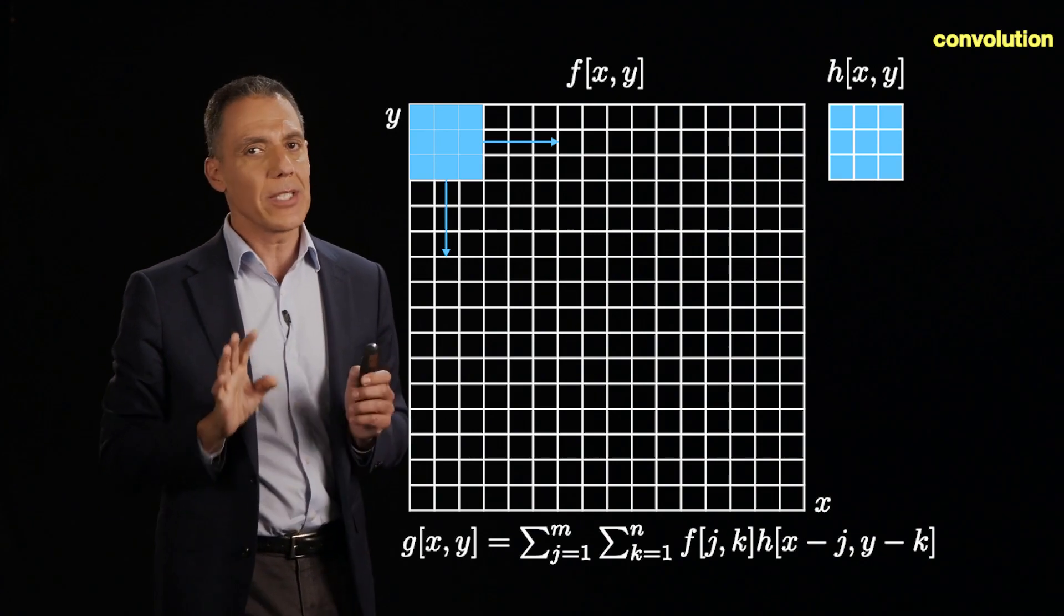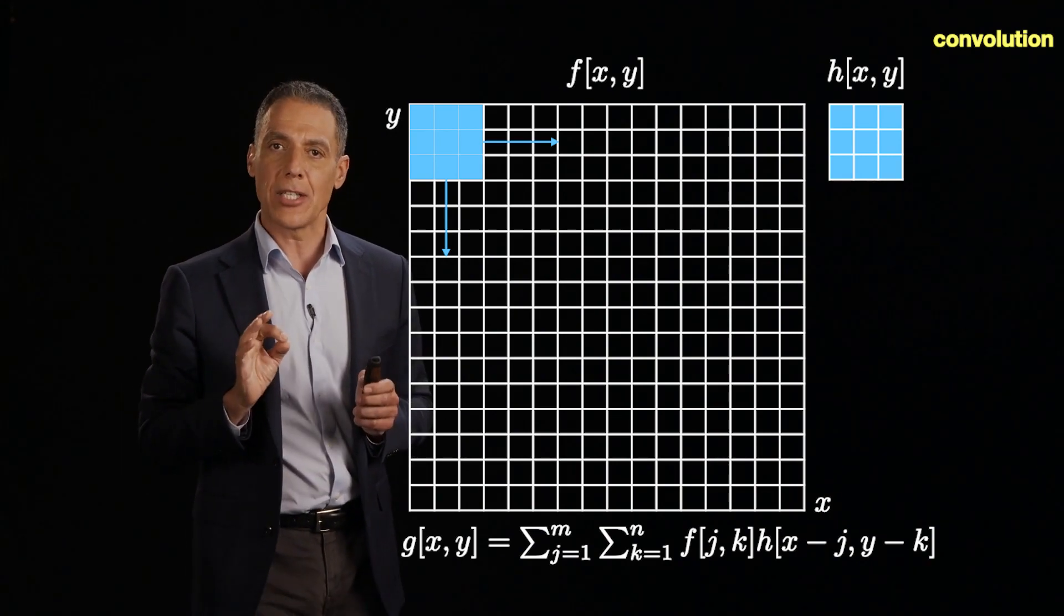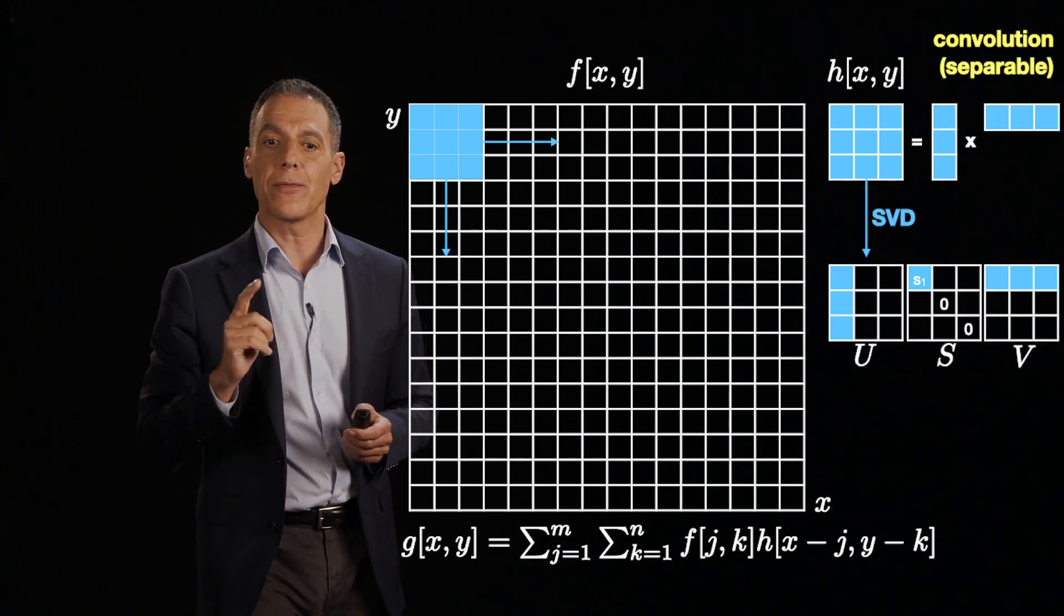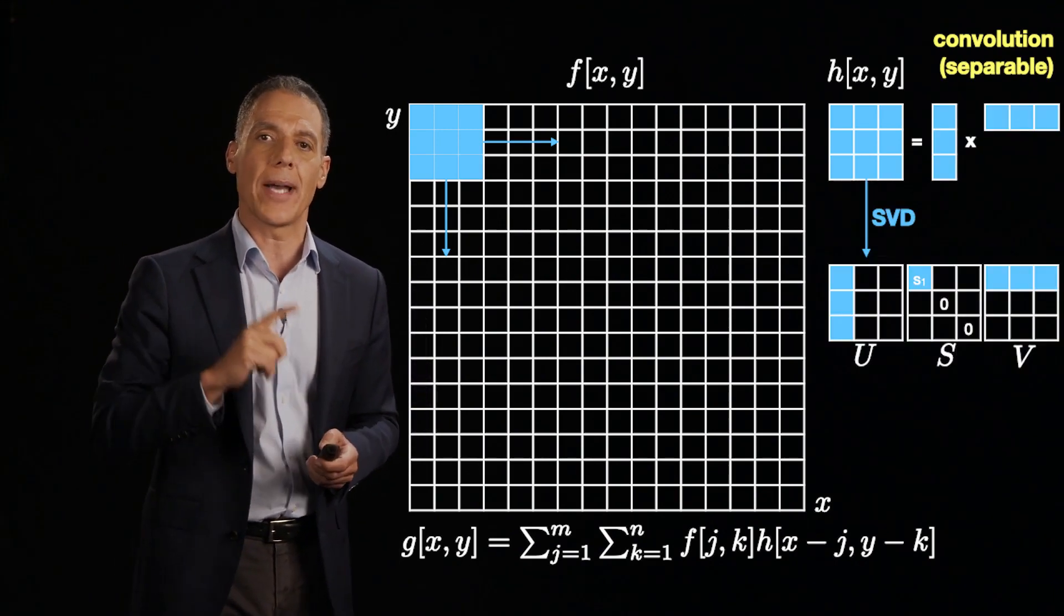Now, every once in a while, when you get lucky, you can get a huge savings in doing your convolution when your filters are so-called X, Y separable.